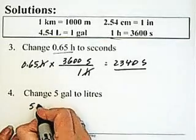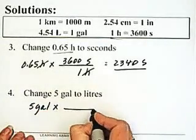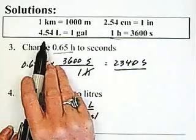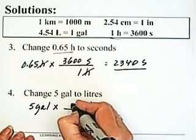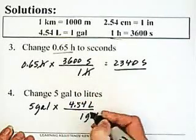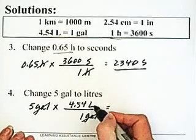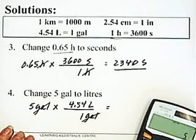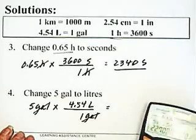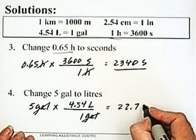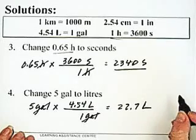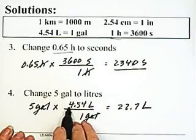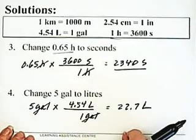Last question: 5 gallons changed to liters. I'm going to put gallons in the denominator and liters in the numerator. The relationship is 4.54 liters equals 1 gallon. My gallons cancel and I'm left with the units of liters. I take my 5, multiply it by 4.54, and divide by 1: 5 times 4.54 equals 22.7 liters. Again, does that answer make sense? We have 5 multiplied by a little bit more than 4 — 5 times 4 is 20, and this is a little bit more than 20. That's a perfectly reasonable answer.